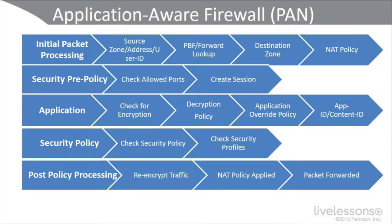So there's the initial processing of the packet — looking at the source zone, for example, the untrusted zone or traffic coming from the trusted zone to the untrusted zone, IPv4 and IPv6 addressing, and even identifying a user, maybe based on a user who's part of Active Directory or some other e-directory. Then a policy-based forward lookup will happen, and then it will be passed on to the destination zone.